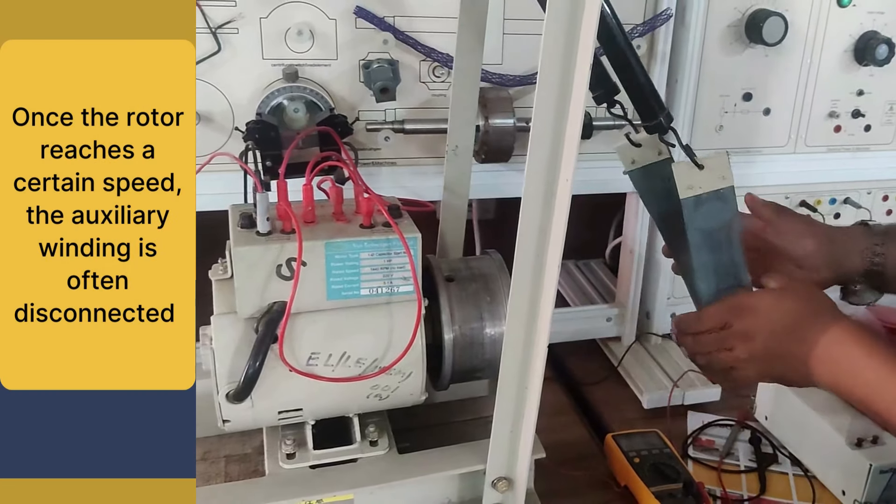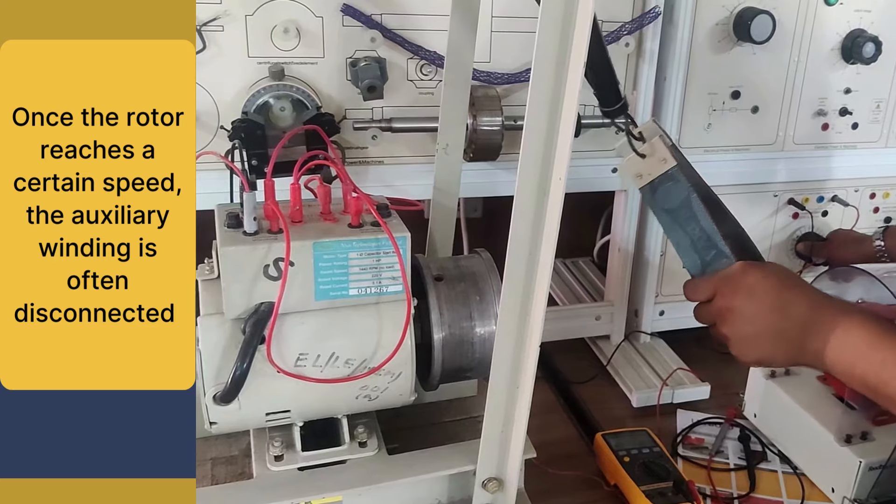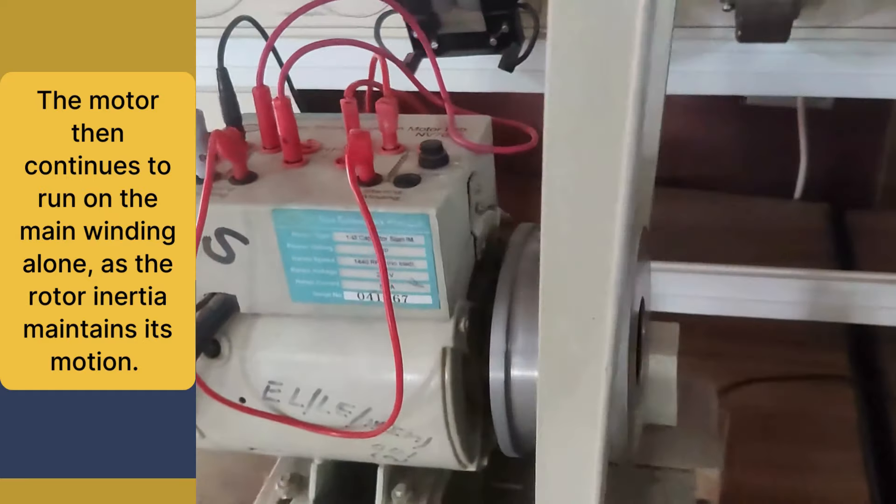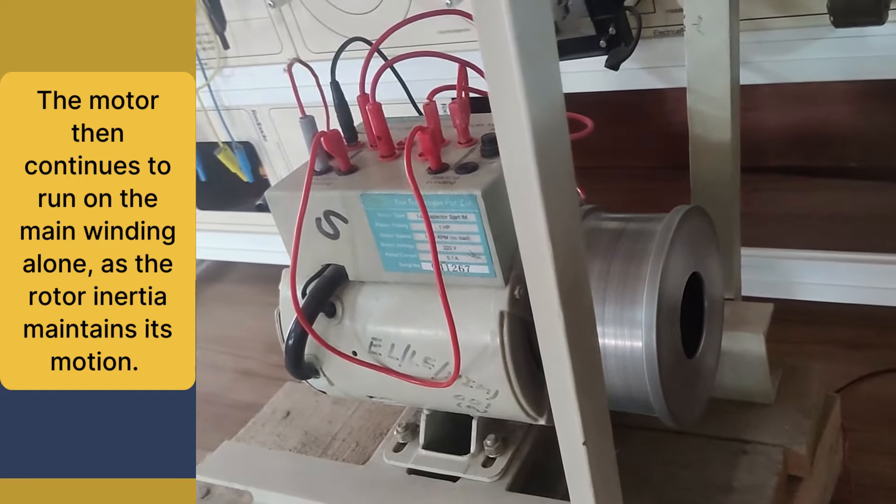Once the rotor reaches a certain speed, we do not need the auxiliary winding. The motor then continues to run on the main winding alone, and the rotor inertia maintains its motion. We have seen how the single-phase motor runs.